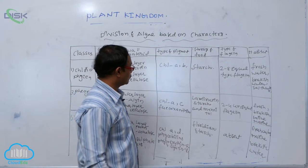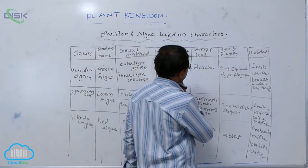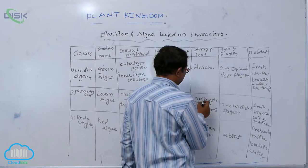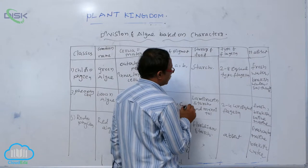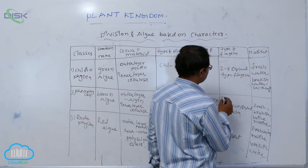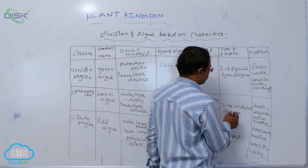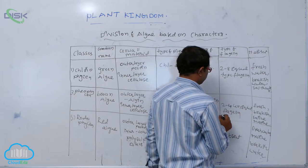Storage material is in the form of laminarian starch and mannitol polysaccharide. The type of flagella are unequal and pear-shaped.